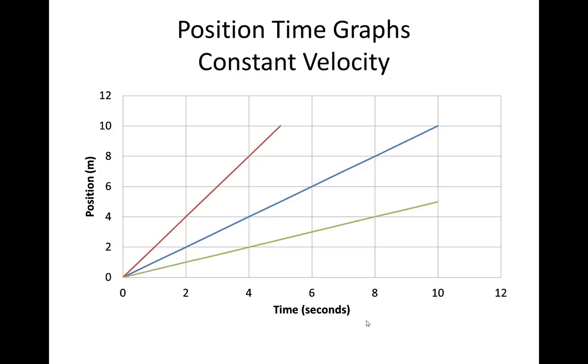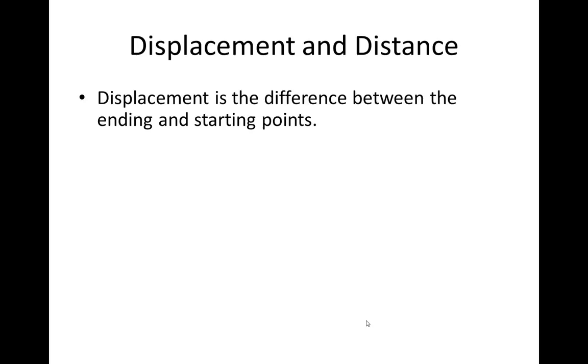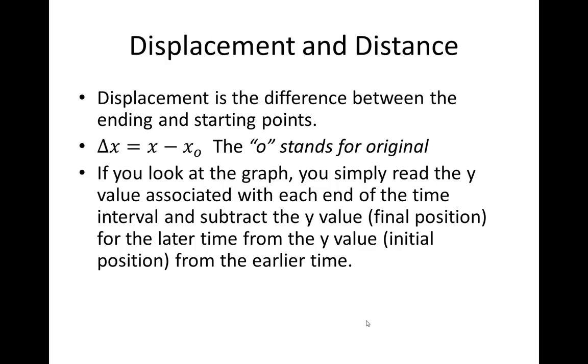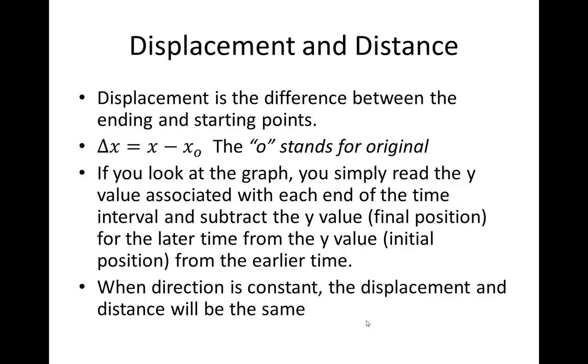We've got three lines. The red line goes 10 meters in five seconds, and then goes 5 meters in 10 seconds. Distance is the difference between the ending and starting points. We refer to that as change in X. So that Greek letter, the Greek triangle, is the Greek letter delta, which means change in. So the delta X, or the change in X, is equal to a later position minus the original position. If you look at the graph, you simply read the Y values, and that's how you get your displacement.